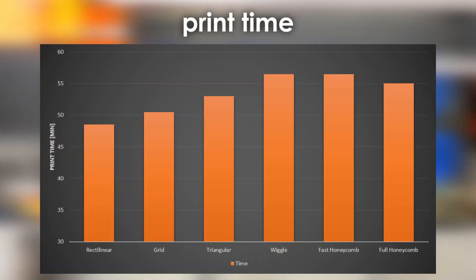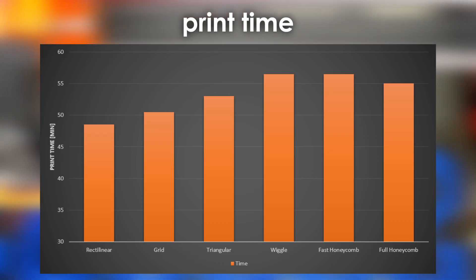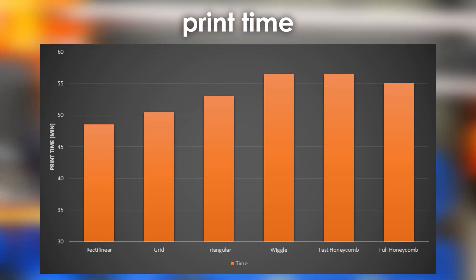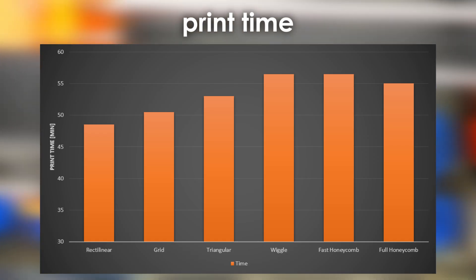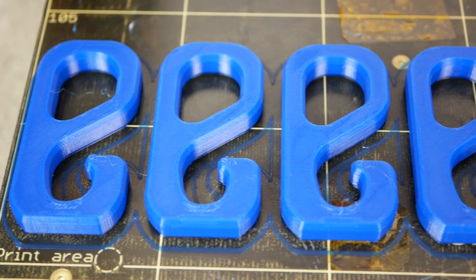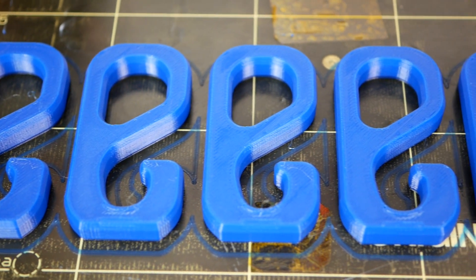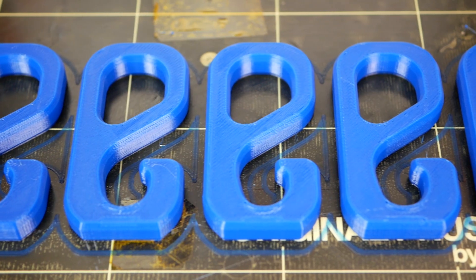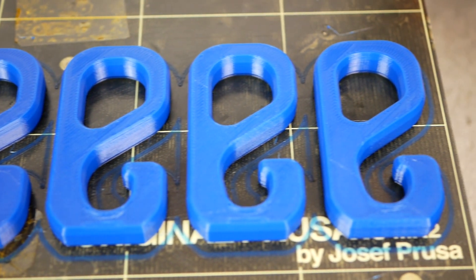Print time for the Rectilinear infill was the shortest with only 48.5 minutes. Grid infill took 50.5 minutes and Triangular 53. The patterns with lots of directional changes took the longest with 55 minutes for the full honeycomb and interestingly Wiggle and Fast Honeycomb took the longest needing 56.5 minutes. This is not fully representative since the time changes due to the geometry and ratio between outer walls and infill but shows that you can definitely save some time using the standard Rectilinear infill pattern.